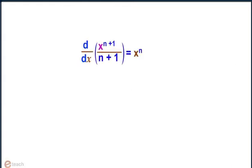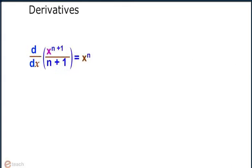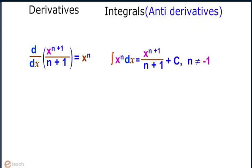d/dx of [x^(n+1) / (n+1)] equals x^n, and its corresponding integral is: integration of x^n dx equals x^(n+1) / (n+1) plus c, where n is not equal to minus 1.